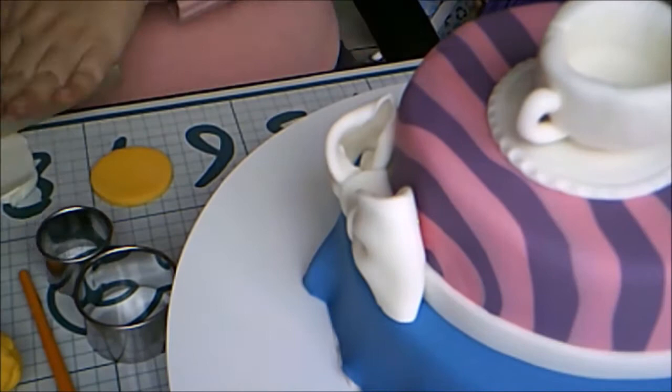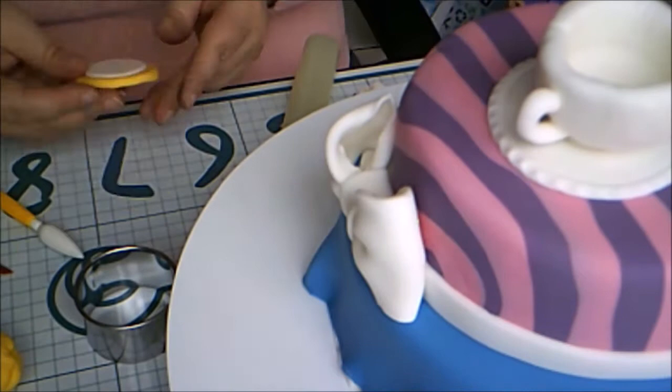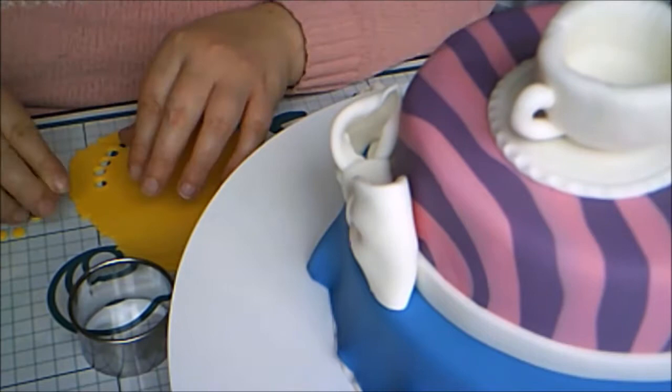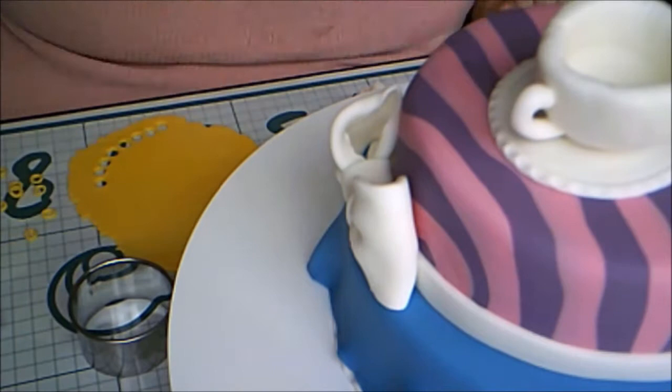Then I rolled out some yellow fondant and cut out a circle, and I covered it with a circle of white. This technique is something I've used before on the police cake and others. I cut out some small circles with a large piping tip and cut some even smaller circles out of the center of them with a small round piping tip. These are my chain links.